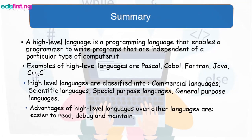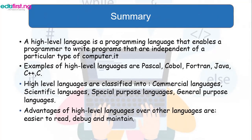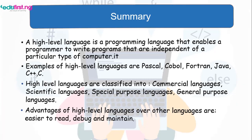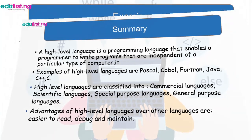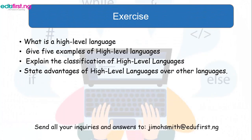To summarize, a high-level language is a programming language that enables a programmer to write programs. We gave examples such as PASCAL, COBOL, FORTRAN, and others, and we discussed the advantages. For the exercise, consider: what is a high-level language, give examples, explain the classification, and state the advantages of high-level languages over others.